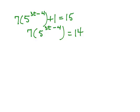Then we're going to divide both sides by 7. So 5 to the 3t minus 4 is going to equal 14 divided by 7 is 2. And now we have 5 to the 3t minus 4 equals 2.